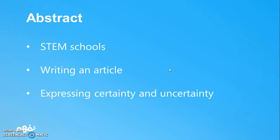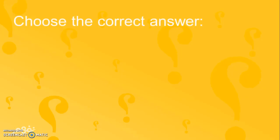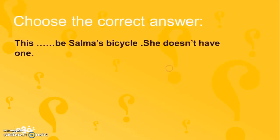Now let's check ourselves for some questions. First, choose the correct answer. This one be someone's bicycle, she doesn't have one. Must have or can't?